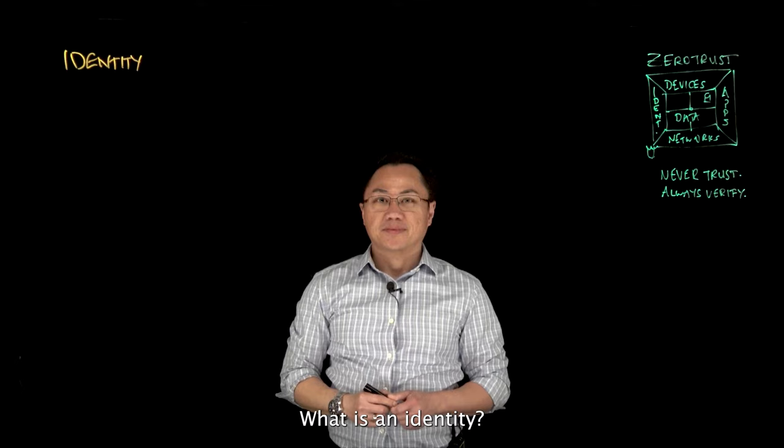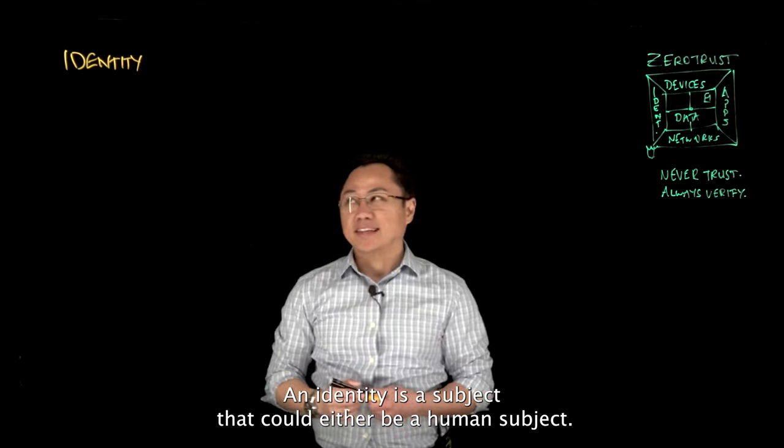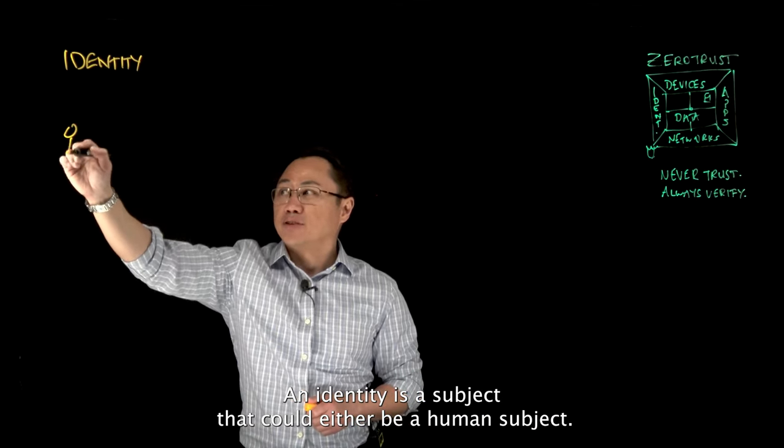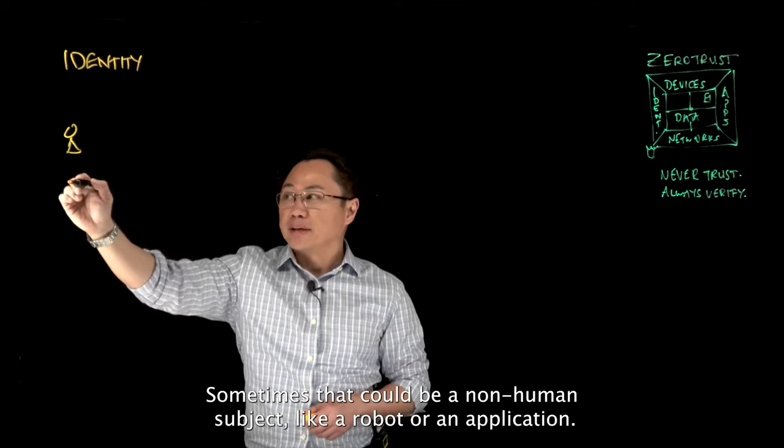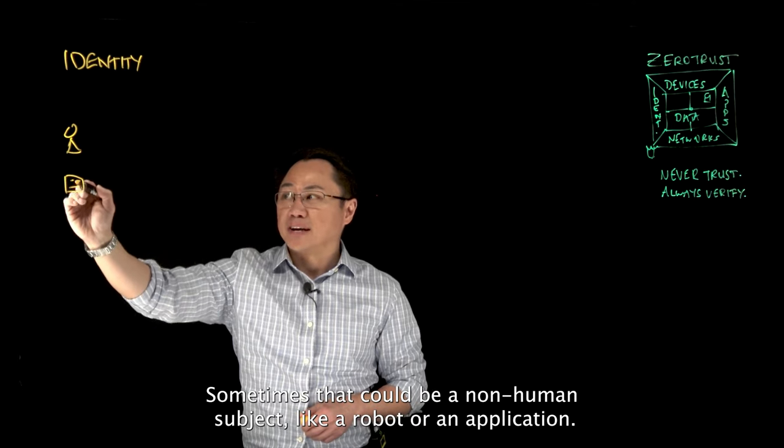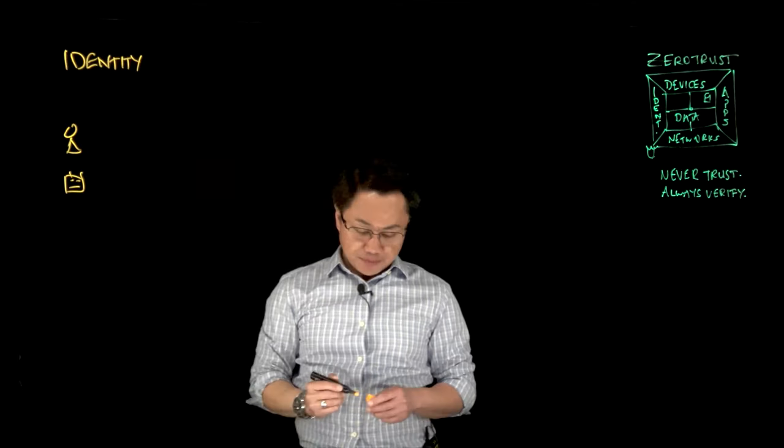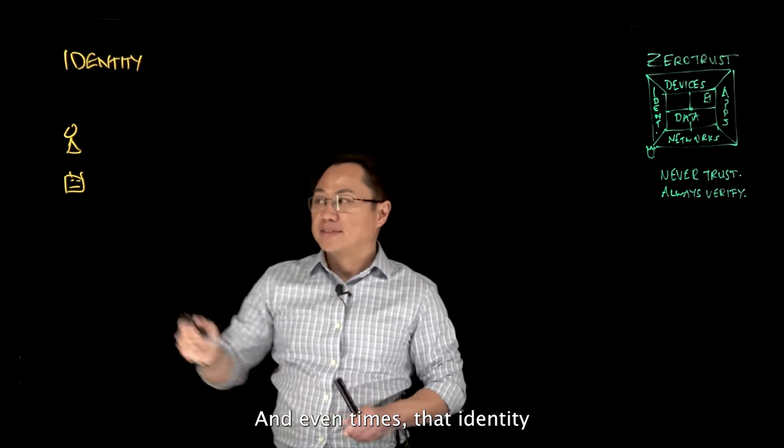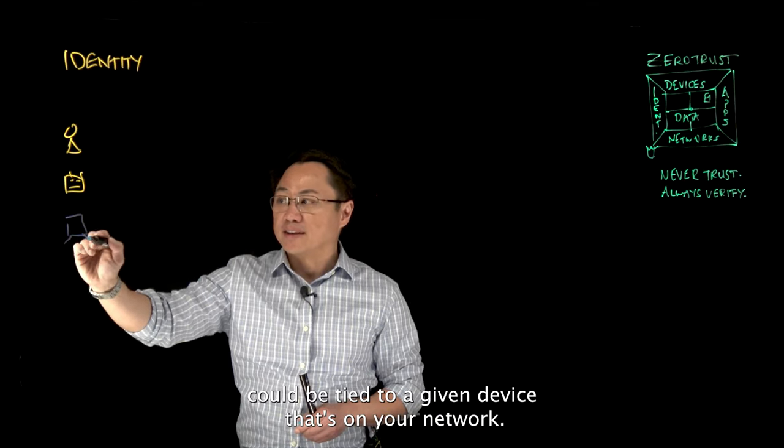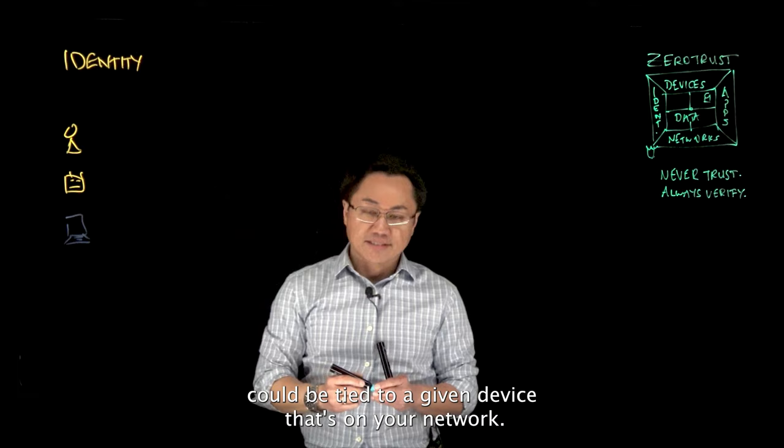What is an identity? An identity is a subject that could either be a human subject, sometimes that could be a non-human subject like a robot or an application, and even times that identity could be tied to a given device that's on your network.